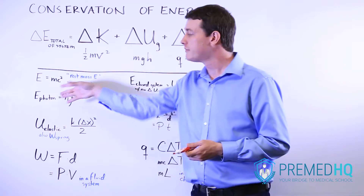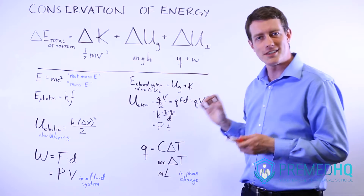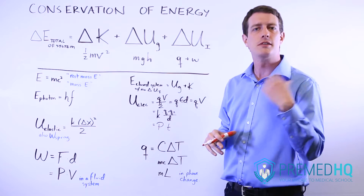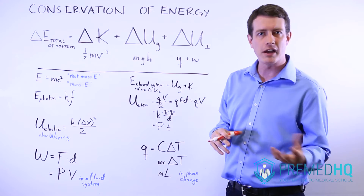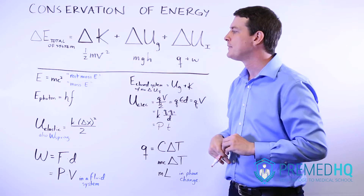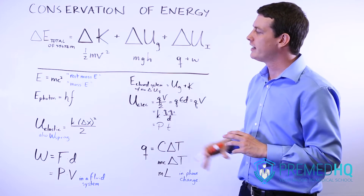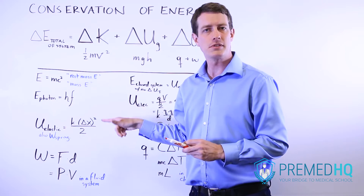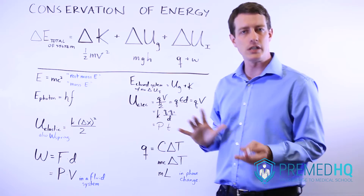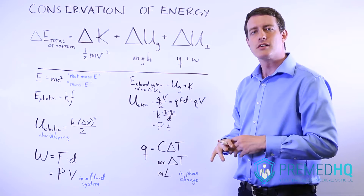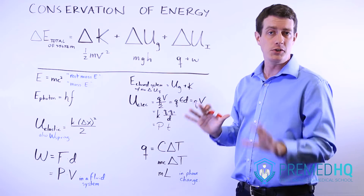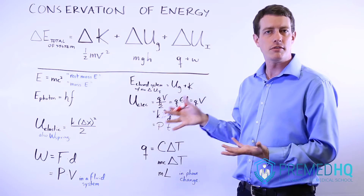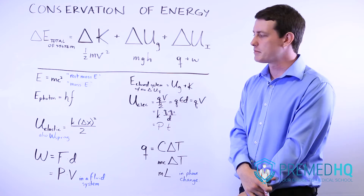The energy of a photon — keep in mind this is a photon, a light wave, or something perhaps in the microwave spectrum or the ultraviolet spectrum, some form of light energy — that energy is equal to h times f, where h is Planck's constant. Planck's constant is a number you don't need to memorize; it's something they'll often give to you on the MCAT if it comes up.